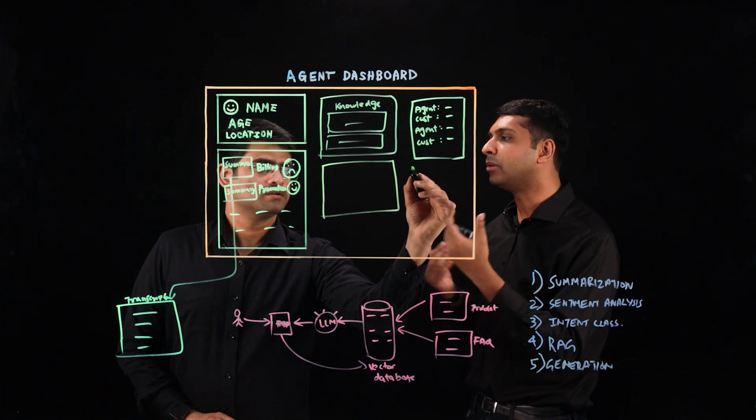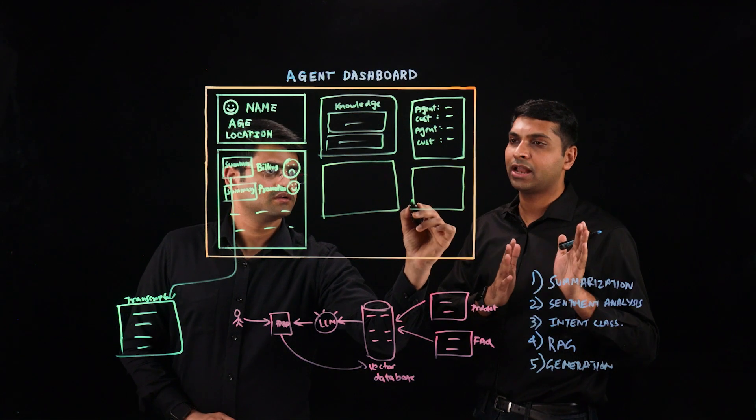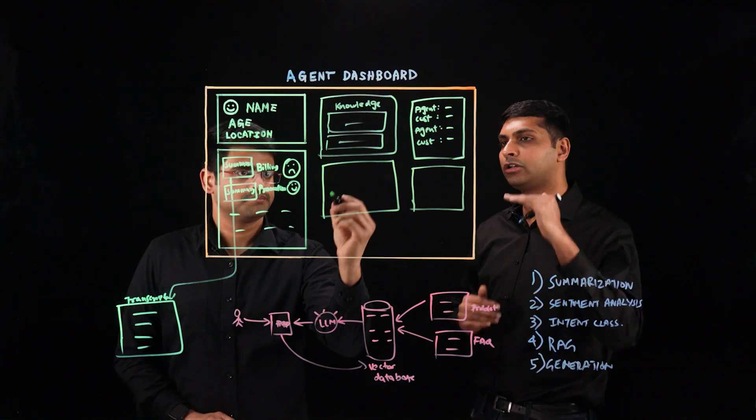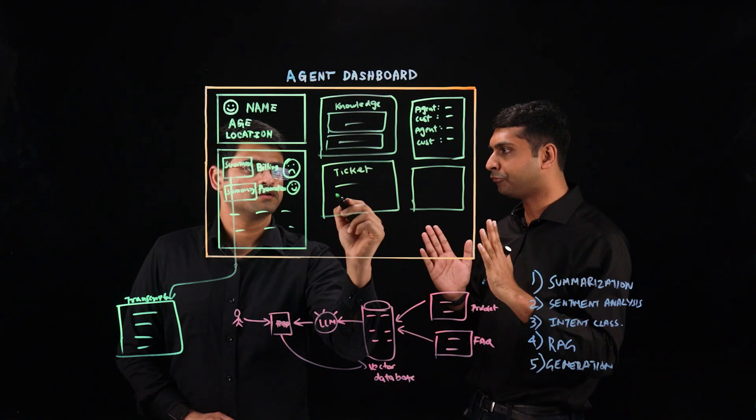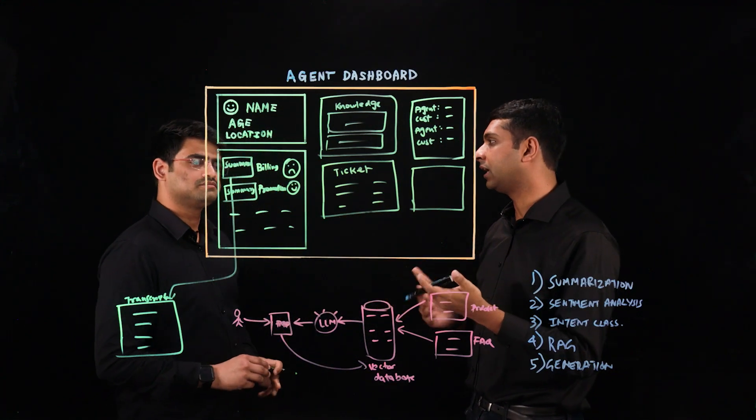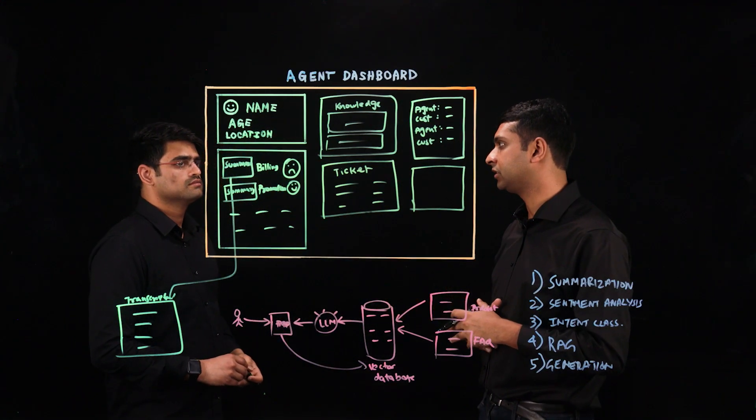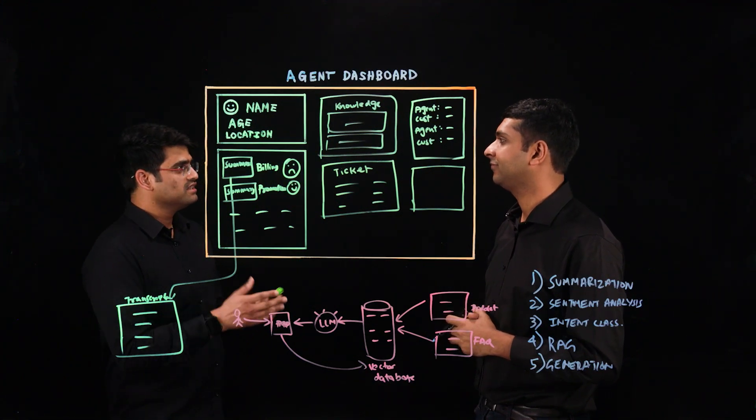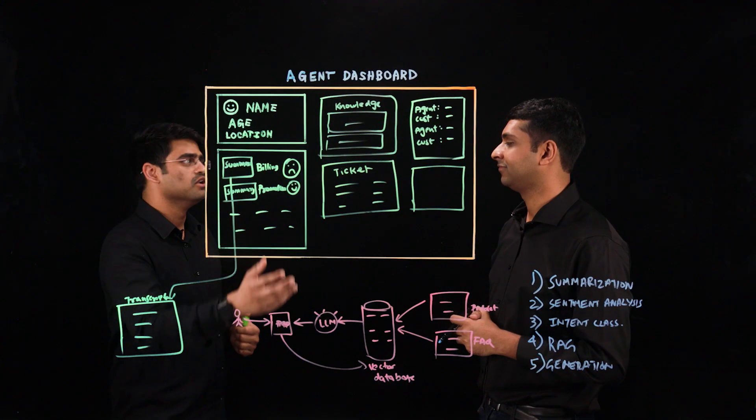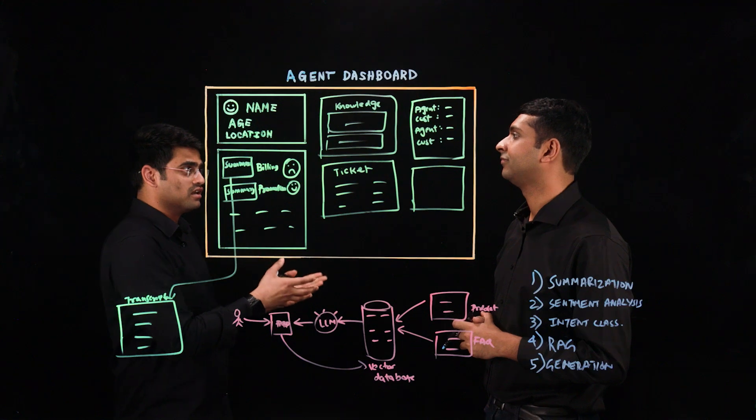So think of trouble ticketing systems where you can have a large language model automatically pre-populate all of the different fields in this trouble ticket form when it makes it easy for the agent to then just review that information. Yes, that will be really helpful because usually the agents spend a lot of time in taking notes, creating those trouble tickets after the call has ended.